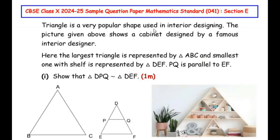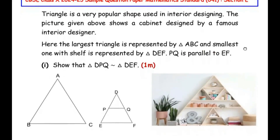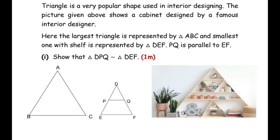Triangle is a very popular shape used in interior designing. The picture given shows a cabinet designed by a famous interior designer. The largest triangle is represented by triangle ABC and the smallest triangle with one shelf is represented by triangle DEF. It is given that PQ is parallel to EF, and we need to show that triangle DPQ is similar to triangle DEF.